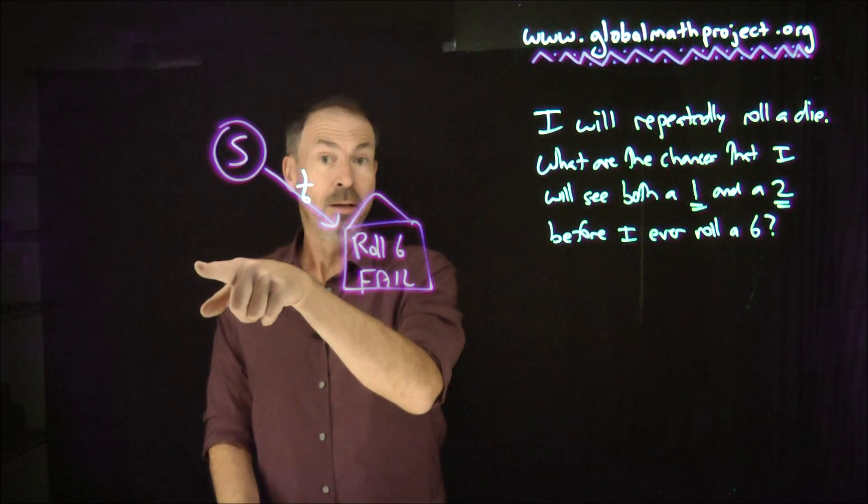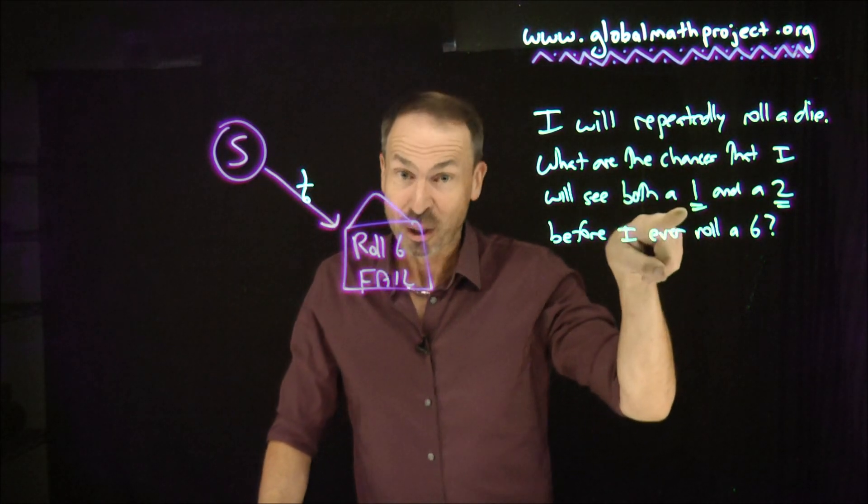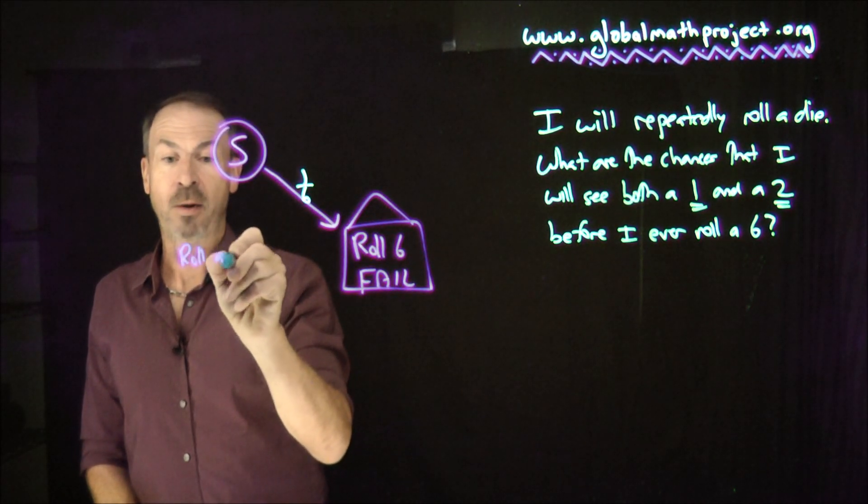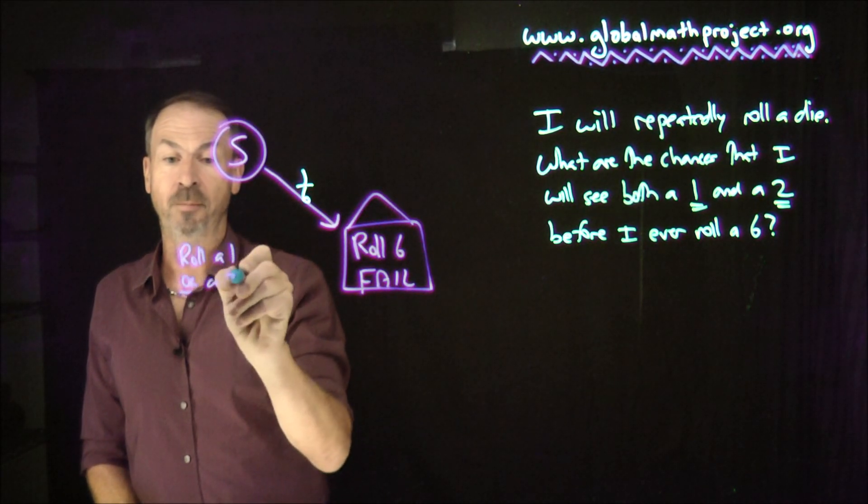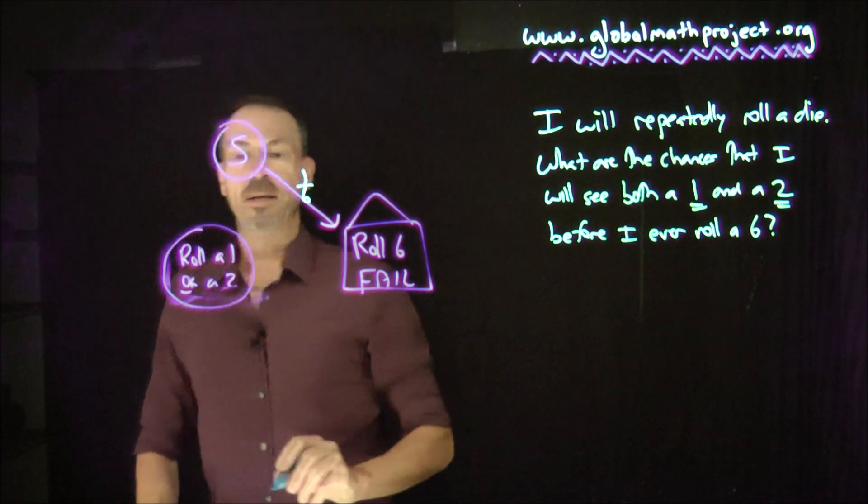Now, people might roll a 1, or they might roll a 2, which would be good. I mean, it's not what I need, I need both a 1 and a 2, but it's got them started. So they could go to a place where they roll a 1 or a 2, which case, well, I shouldn't do that as a house, that's still a node, so they're on their way.